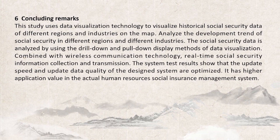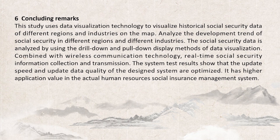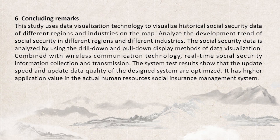Concluding remarks. This study uses data visualization technology to visualize historical social security data of different regions and industries on a map, and analyzes the development chain of social security in different regions and industries. Social security data is analyzed by using the drill-down and pour-down display methods of data visualization. Combined with wireless communication technology, real-time social security information collection and transmission is achieved. The system test results show that the update speed and update data quality of the designed system are optimized, and it has higher application value in the actual human resources social insurance management system.